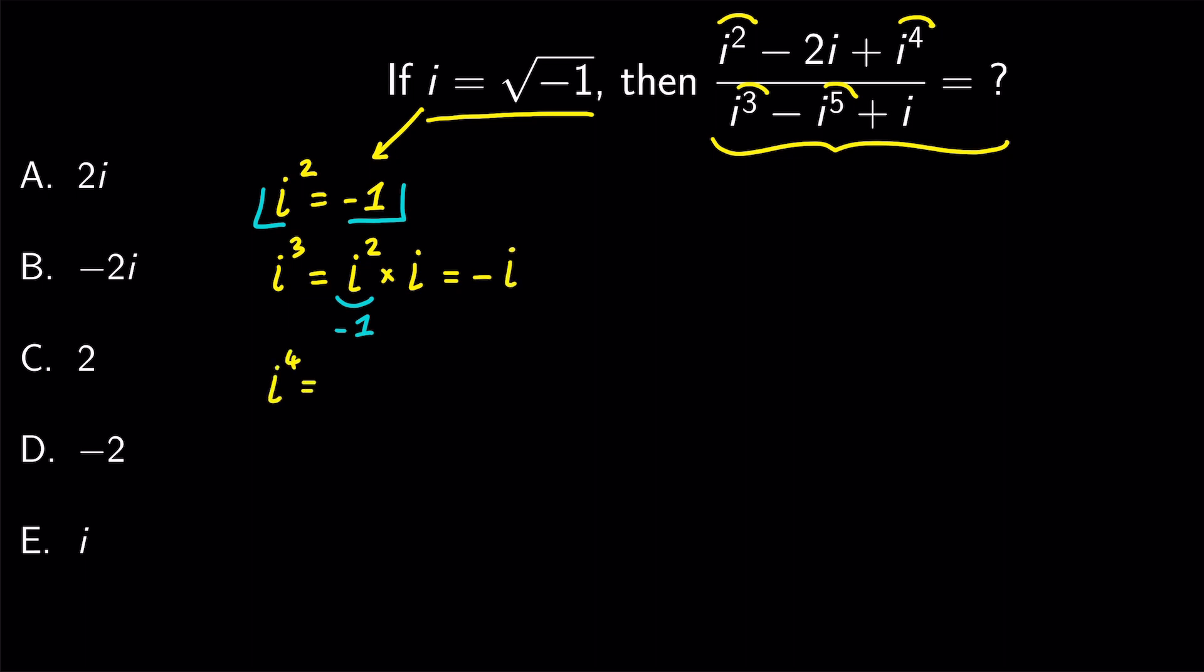i to the power of 4 can be written as i squared times i squared. i squared is minus 1, so we get 1. And finally, i to the power of 5 equals i to the power of 4 times i. i to the power of 4 is 1.